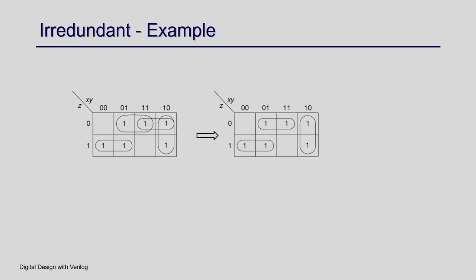Here is one more example of e-redundant. After expansion, you get a coverage with 4 cubes covering all the ones. Clearly, one of them is redundant because it is already covered by another cube. When you apply the e-redundant step, you basically remove that prime implicant and get a reduced set. Incidentally, for this example, this turns out to be the minimal one.